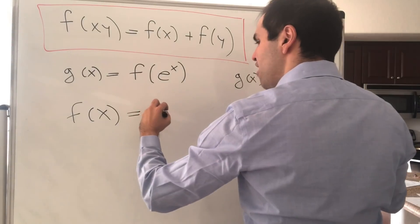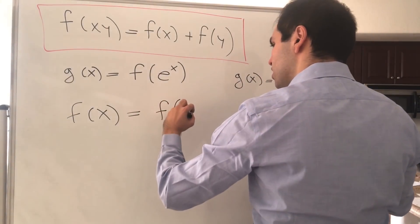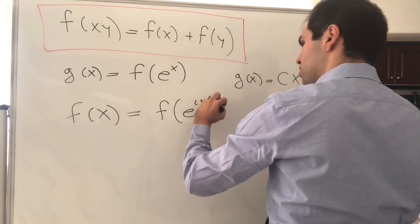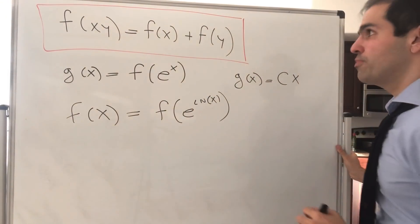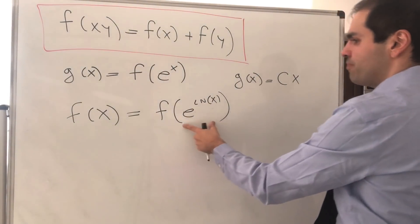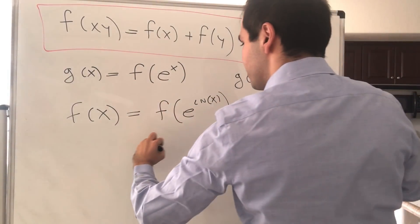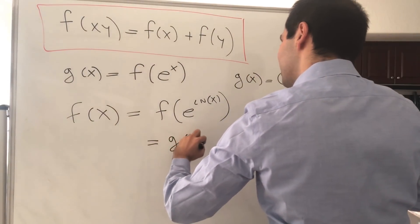Well, notice you can write this as f of e to the ln of x, at least if x is positive. And then you get this, so f of e to the ln of x, that's the same thing as g of ln of x.